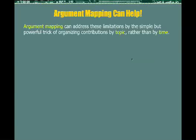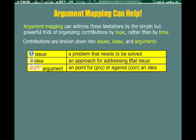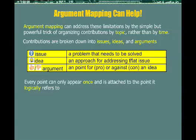Argument mapping can help with this. It does so by the simple but powerful trick of organizing contributions by topic rather than by time. Contributions are broken down into issues, ideas, and arguments. An issue represents a problem that needs to be solved. An idea represents an approach for addressing that issue. And an argument represents a point for or against an idea. A for-point is called a pro, and an against-point is called a con. Every point can only appear once and is attached to the point it logically refers to.